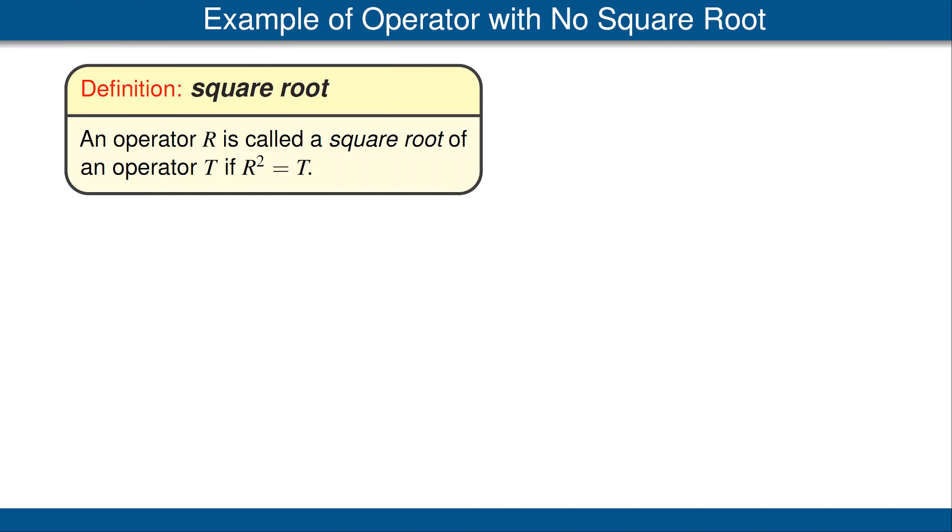Recall that an operator r is called a square root of an operator t if r squared is equal to t. Every complex number has a complex square root, so you might think that would be true on complex vector spaces, but it's not.